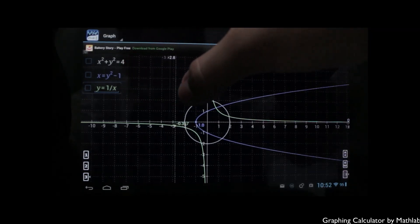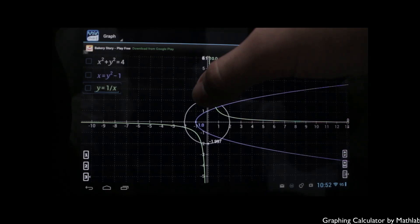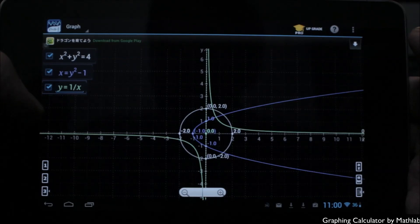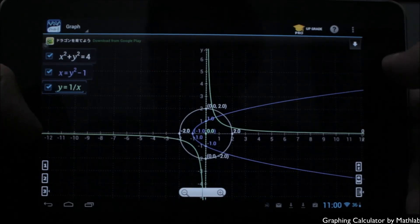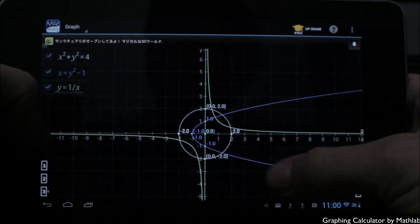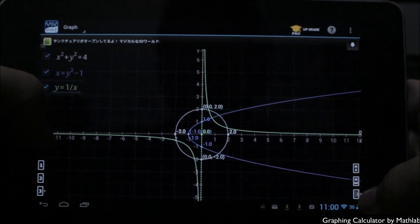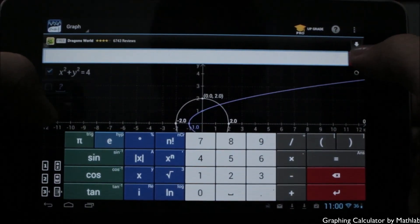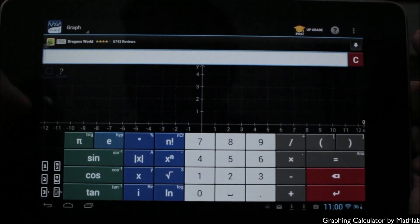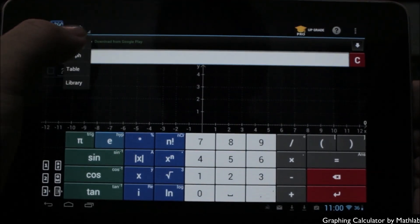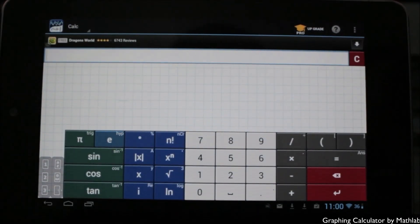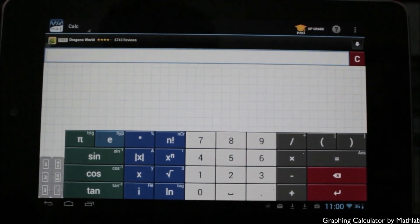So that about sums up Graphing Calculator by Math Lab. Again, this is a free app in the Google Play Store. You can also check out the pro upgrade available via a $5.99 in-app upgrade to get more features. This is a scientific calculator, a graphing calculator, a fraction calculator, algebra calculator, matrix calculator, and more, all in one easy to use powerful application. You can find this in the Google Play Store today.